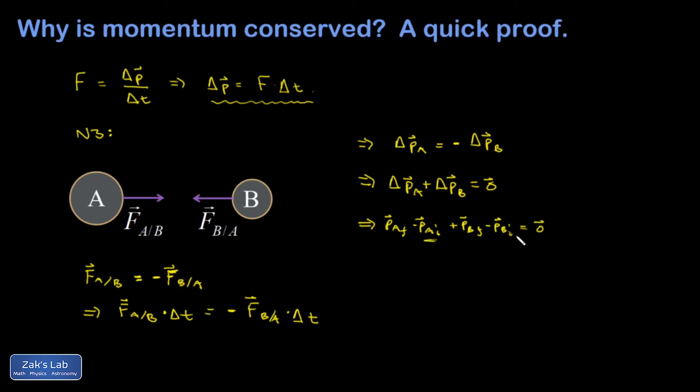If I then add the initial components to the other side of the equation and then turn the whole thing around, I have P A initial plus P B initial is equal to P A final plus P B final.